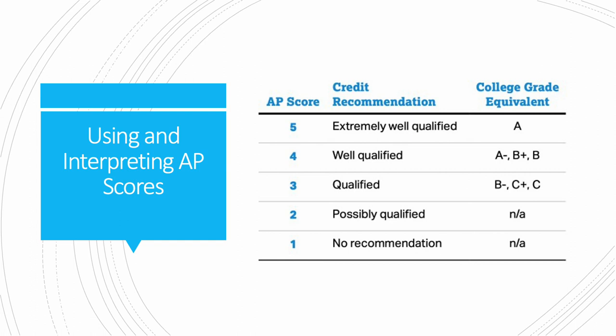Using and interpreting AP scores: scores range from 1 to 5, with 1 being the lowest and 5 the highest. A 5 is interpreted as a solid A — extremely well-qualified. A 4 is well-qualified, based on a range from A- to B, depending on whether it's a high 4 or a low 4. A 3 is qualified, ranging from B- to C. A 2 is possibly qualified and a 1 is not recommended. When it comes to college credit, some colleges accept a 3, but most colleges require a 4 or a 5.